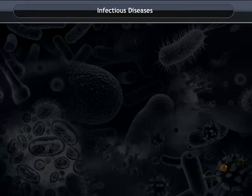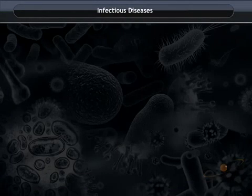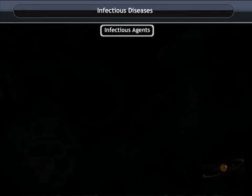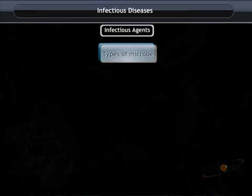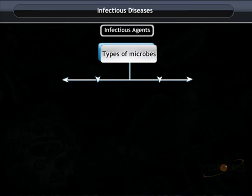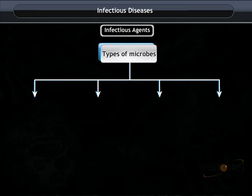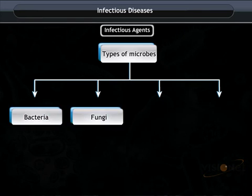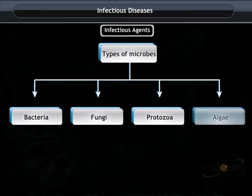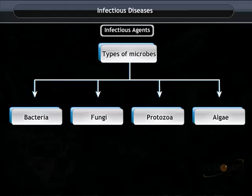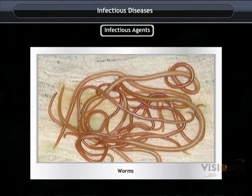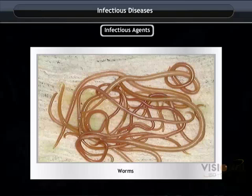Infectious diseases are spread by infectious agents. There are a diverse range of microbes that can be grouped into four main categories, i.e. Bacteria, Fungi, Protozoa, and Algae. The disease-causing pathogens may be single-cellular or multicellular organisms such as worms. Let us study some examples of disease-causing organisms.